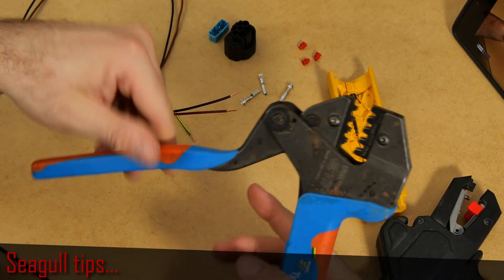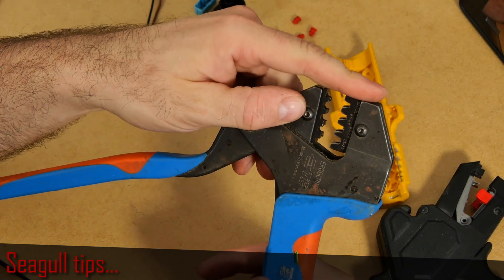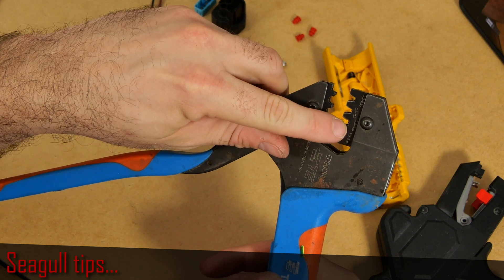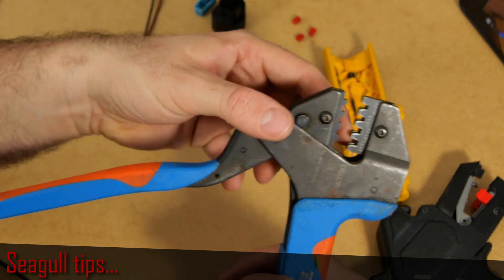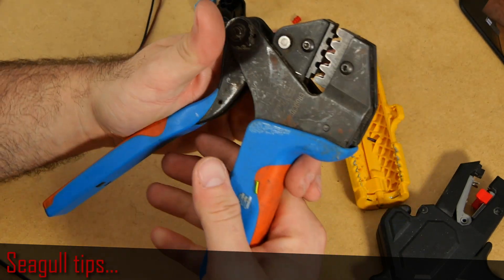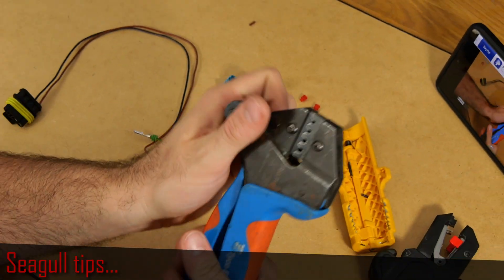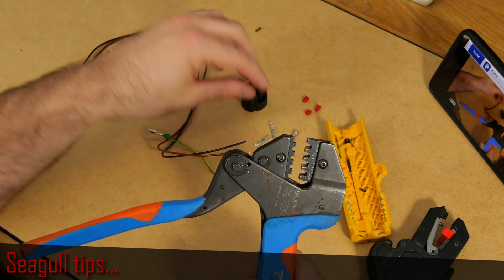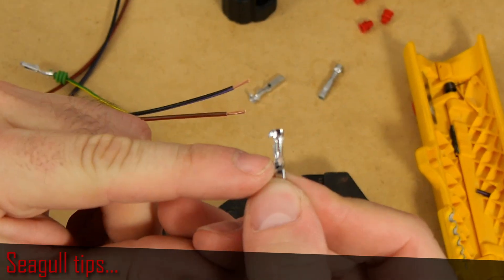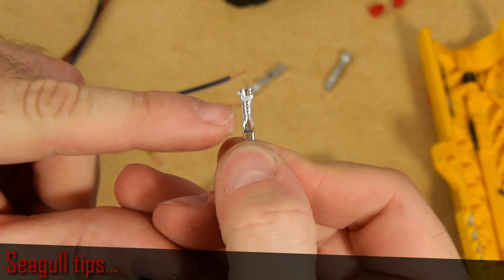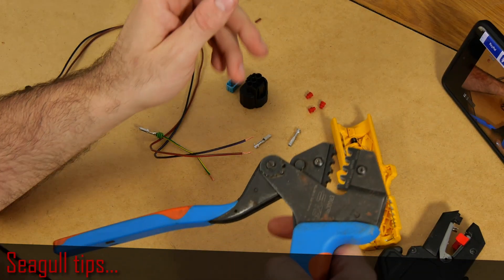So now, this tool, we will use 0.5 to 1.0 connector here. You can see that there is a smaller opening and a bigger opening, and you want to make sure that the smaller opening will crimp around this area, and the bigger will crimp there where the ceiling is.